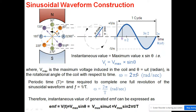Since periodic time is inversely proportional to frequency, we can write ω = 2π/T, given in radians per second. We are now able to write the instantaneous value of generated EMF in multiple forms: V_max × sin(θ), where θ can be written in terms of angular frequency ω, and angular frequency can be written in terms of periodic time T.